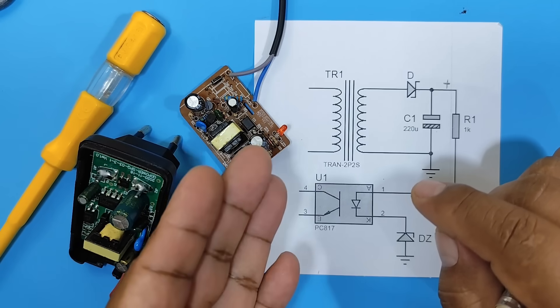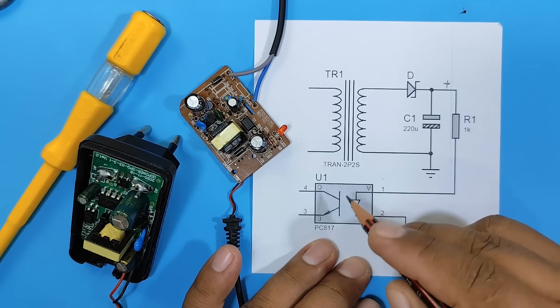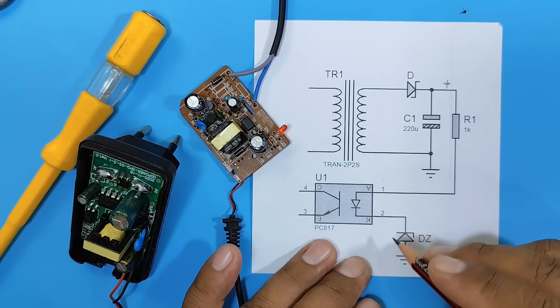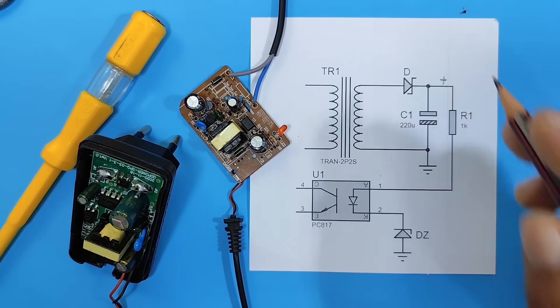Switching power supplies or cell phone chargers control their output voltage with the help of an optocoupler and a Zener diode. This is the general method they use to control their output voltage.